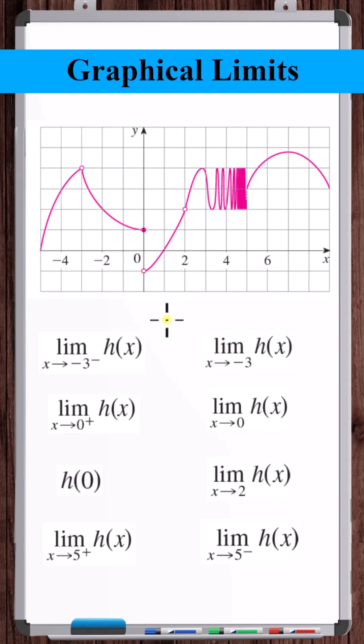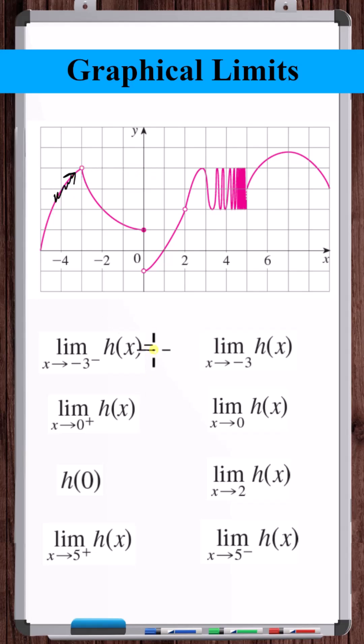Let's interpret these graphical limits. What is the limit as x approaches minus 3 from the left? From the left, the function is approaching 4.